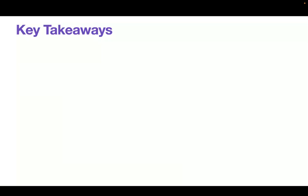And we're also going to have complete emission spectra, so the thermal emission of this planet, from 0.6 to, again, sort of 15 microns. I haven't even touched on emission in this talk up until this point. WASP-17b is going to be really one of the most comprehensively studied exoplanets that we have as of right now. So it's a really exciting time to have this as one of your favorite exoplanets. What are some key takeaways that I've gone through in this talk? I've mentioned how it's really essential to use statistical evidence in combination with our understanding of the physics when we're interpreting the spectra. We need high-quality multi-wavelength observations, both for UV, optical and infrared, if we want to understand the complete chemical inventory of the planet. We've seen that UVIS is helping to unlock some of the bluest wavelengths for the first time with its high throughput and broad coverage for efficient observations. We get these disequilibrium processes and aerosol scattering at a new level than we've had before. And G395H, which in my opinion is the best opportunity to explore the IR, we get really high-quality light curves with fairly limited impact from systematics.